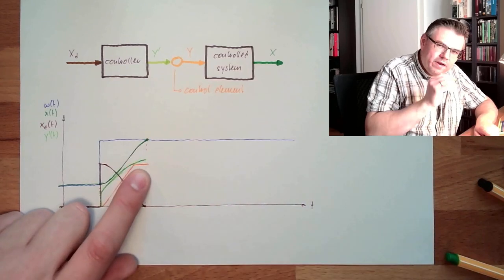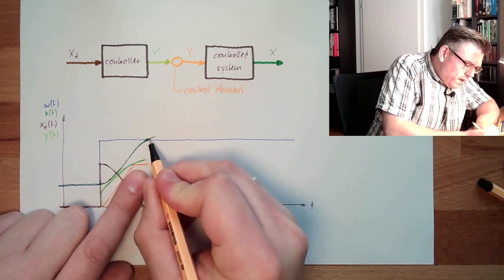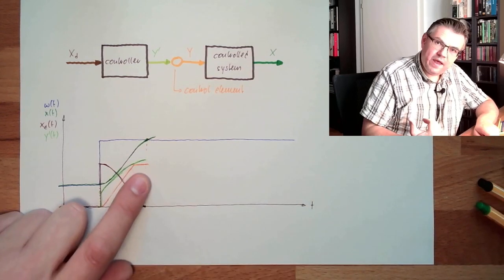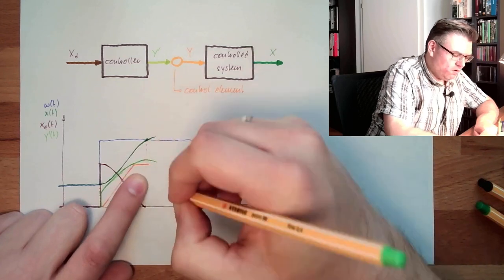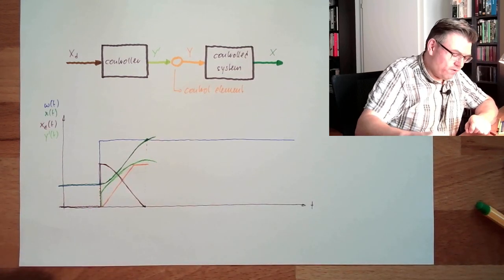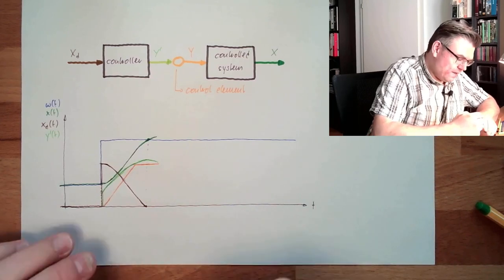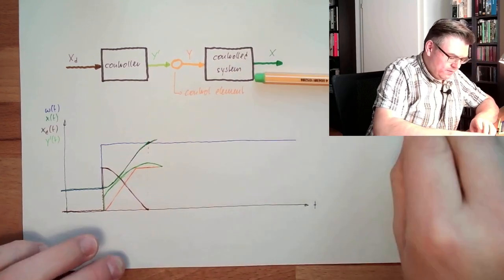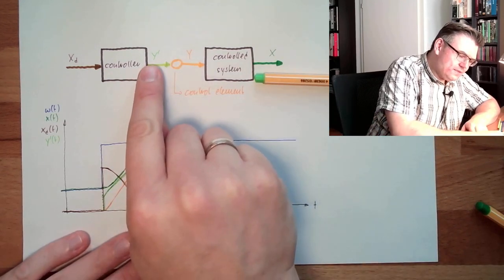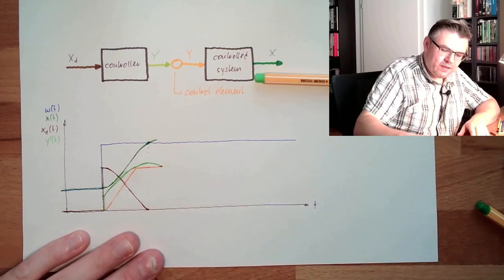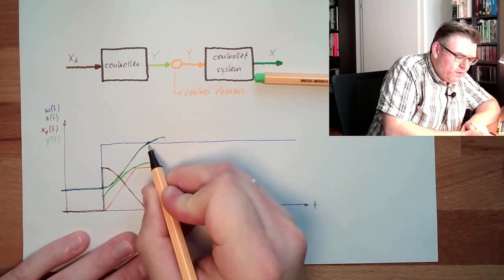And we would, of course, expect our controller immediately to react and go down with our correcting variable. It does, but only internally - this is going down now. Externally, I do not recognize it because I am at the maximum. I will have to wait until this internal value gets smaller than the external maximum, and then they will move together. Up to that point in time, we will simply grow, and maybe grow even further.